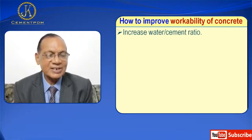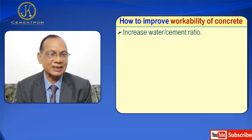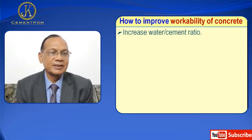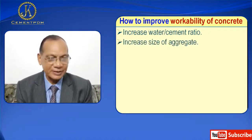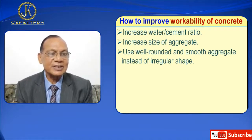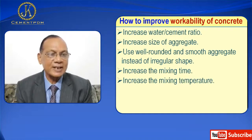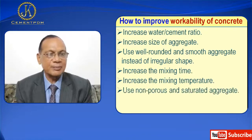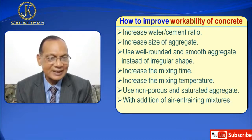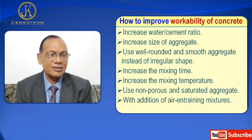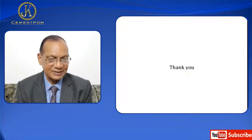Now I will discuss how to improve the workability of concrete. Number one: increase water-cement ratio. Number two: increase size of aggregate. Number three: use well-rounded and smooth aggregate instead of irregular shape. Number four: increase the mixing time. Number five: increase the mixing temperature. Number six: use non-porous and saturated aggregate. And finally, number seven: with the addition of admixtures into the mixture, you can improve the workability of concrete.